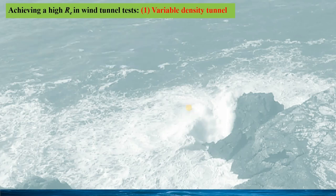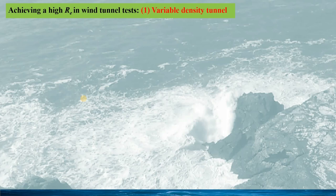From the previous slides, we have seen different airfoil performances at different Reynolds numbers — but how can we examine this difference in practice? Currently, CFD can be used for such modelling, but the most reliable method is still the wind tunnel test. One question is how we can achieve the correct Reynolds number when a smaller model is tested in the wind tunnel. Luckily, there are some special wind tunnels that allow us to achieve the correct Reynolds number with a smaller model, which we will examine in the next three slides.